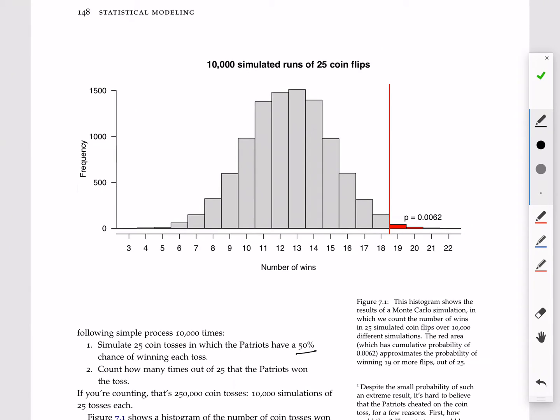What you're looking at here is the probability distribution under those 10,000 simulated runs of 25 coin flips for the number of coin flips that the Patriots won at the beginning of these hypothetical seasons. You can see, on average, they tend to win about 12 or 13 games.